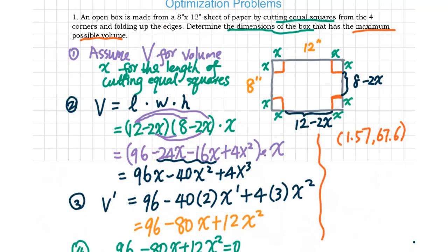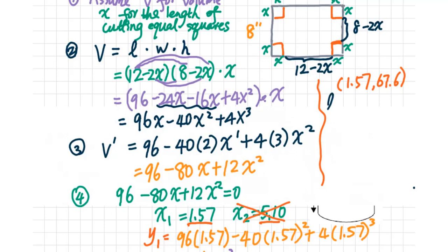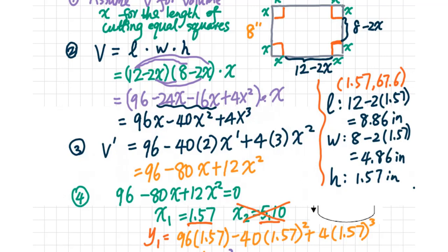Let's go back check the problem. They said determine the dimensions of the box. Therefore, we need to work on the length. It will be 12 minus 2 times 1.57 equals 8.86 for the length, 4.86 for width, and 1.57 inches for the height. This will be the final answer.